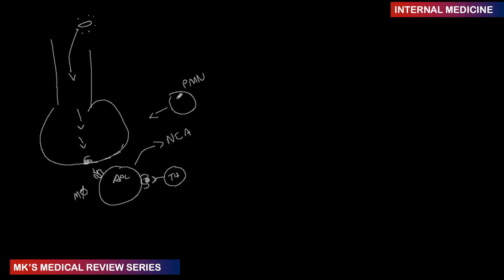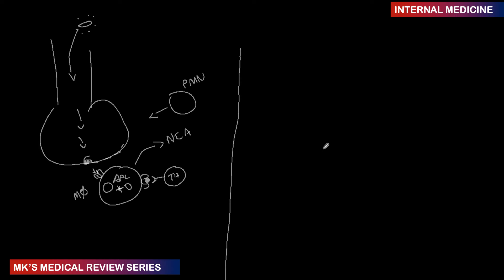The mycobacterium is ineffectively digested because of the mycolic acid, the thick capsule, and capsular antigens that prevent effective phagocytosis. In normal phagocytosis, the organism is engulfed to form a phagosome, which should fuse with a lysosome to form a phagolysosome containing hydrolytic enzymes for digestion. However, with TB this process does not occur effectively — the mycobacterium survives inside the macrophage.